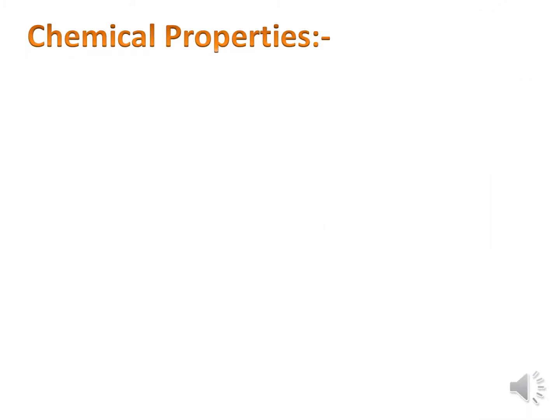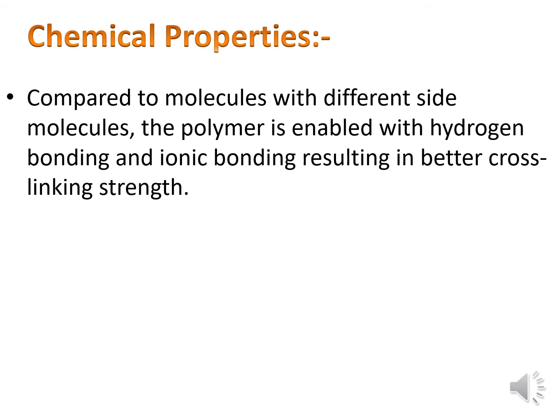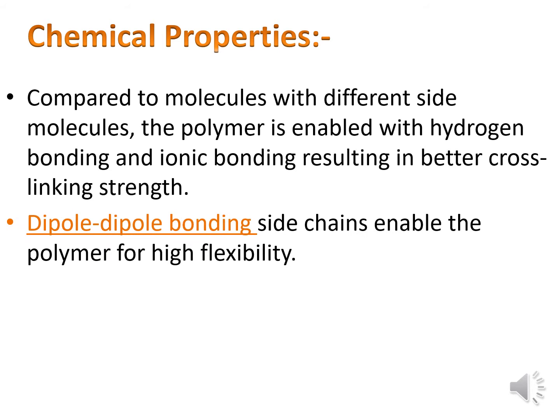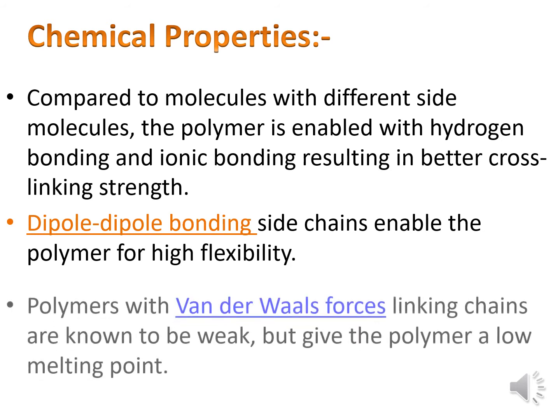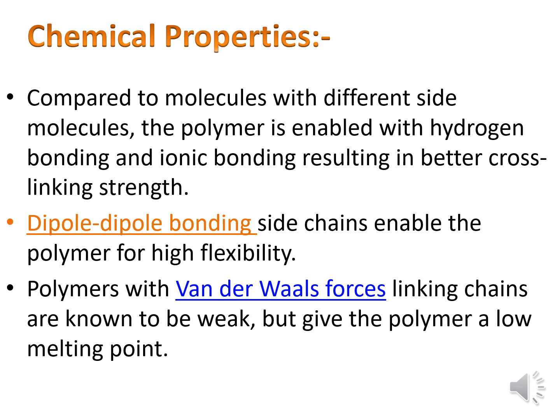Chemical properties: Compared to molecules with different side chains, polymers with hydrogen bonding and ionic bonding result in better cross-linking strength. Second, dipole-dipole bonding side chains enable the polymer for high flexibility. Third, polymers with van der Waals forces linking chains are known to be weak but give the polymer a low melting point.